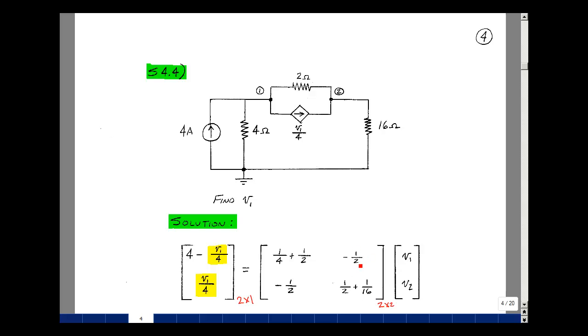What goes in row 1, column 2 is the sum of the conductances between nodes 1 and 2 negated. So that'd be 1 half in this case with a minus sign in front. What goes on the left-hand side of the equation are the currents entering node 1, so that's going to be 4 amps, and then the current in this direction is a minus V1 over 4. That's my first equation.